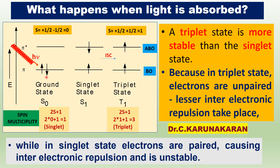When light falls on the molecule — when the molecule is irradiated with light radiation — one of the electrons is promoted to the excited pi star antibonding orbital with no change in spin. So this is again a singlet state, S1. This is the ground state; this is the excited singlet state, with spins still paired.